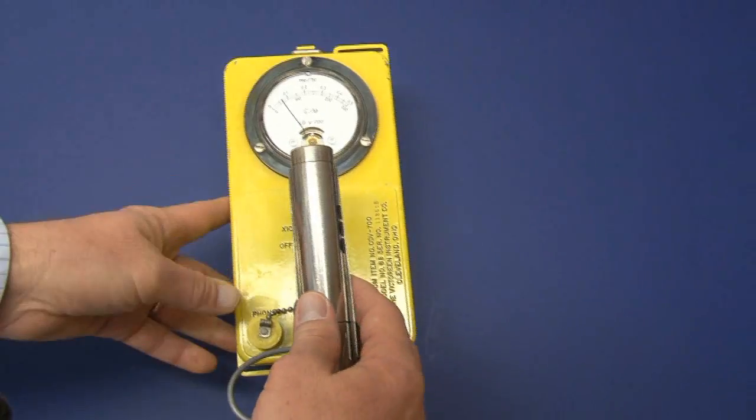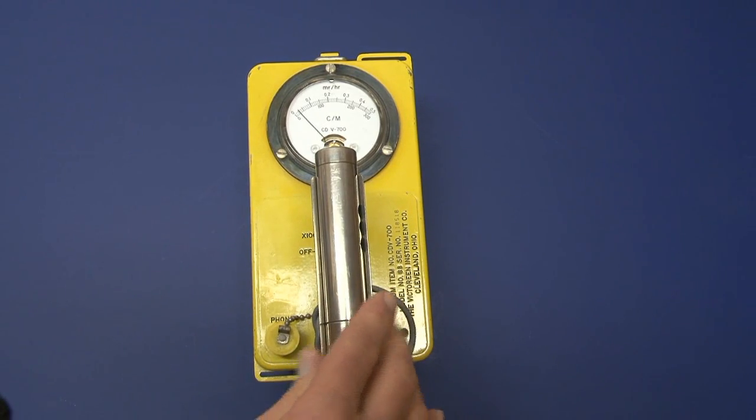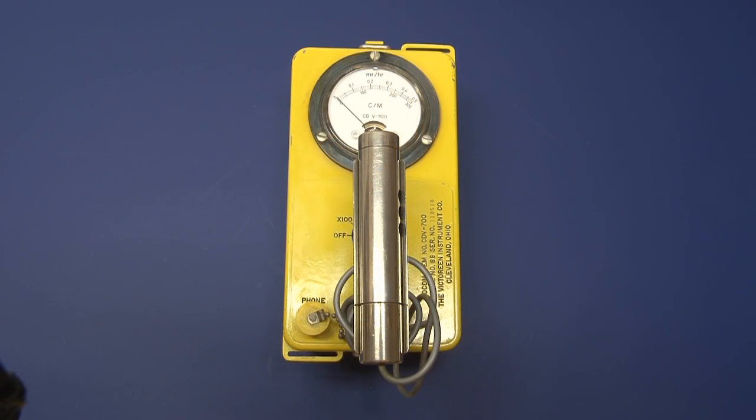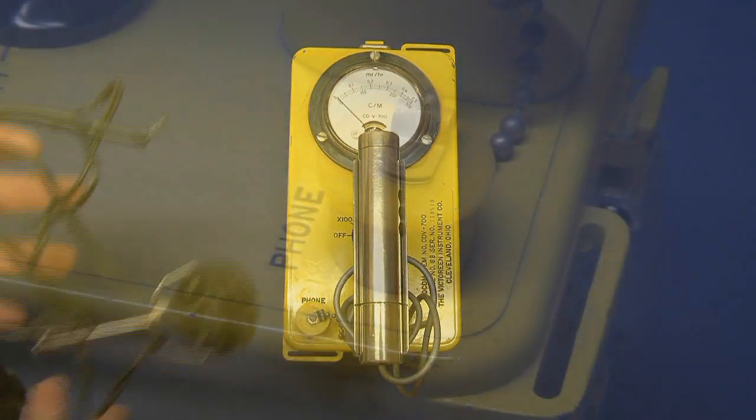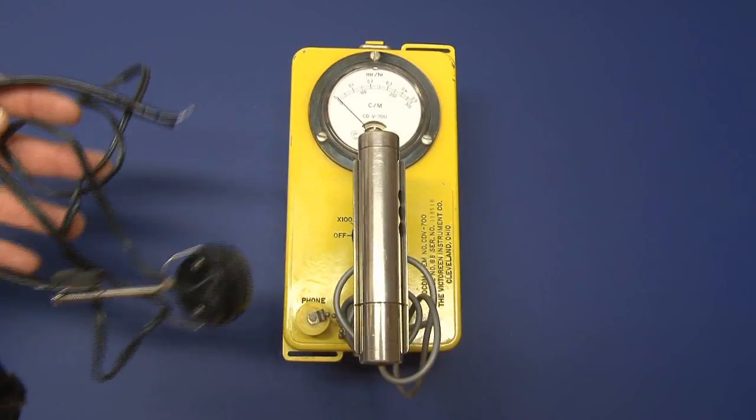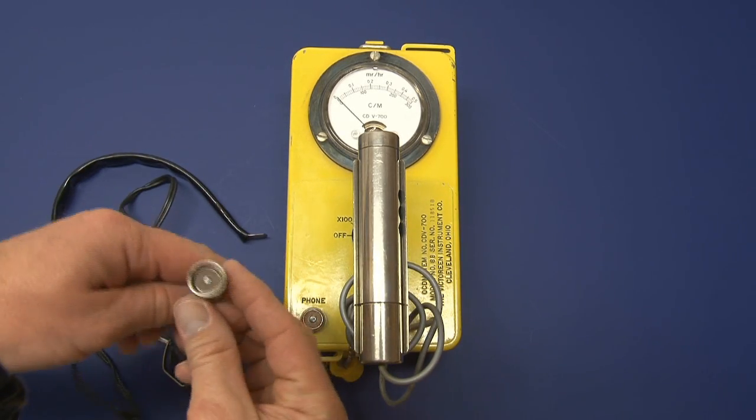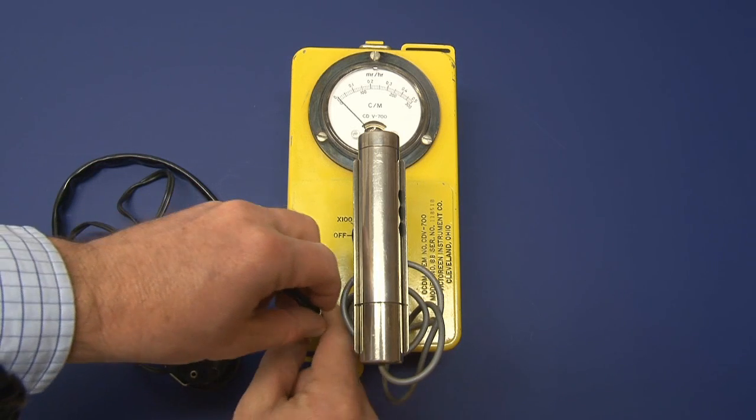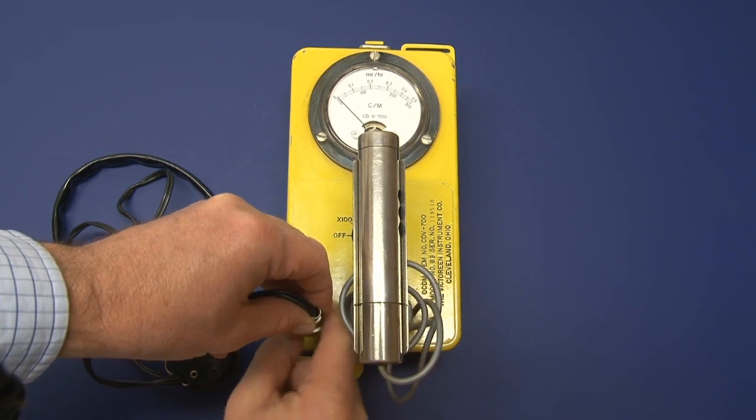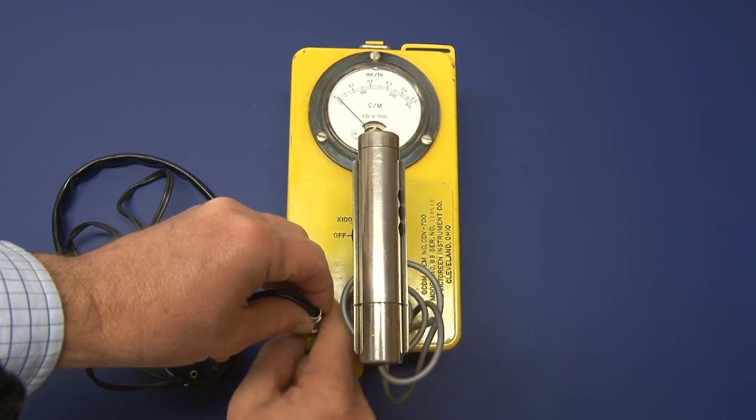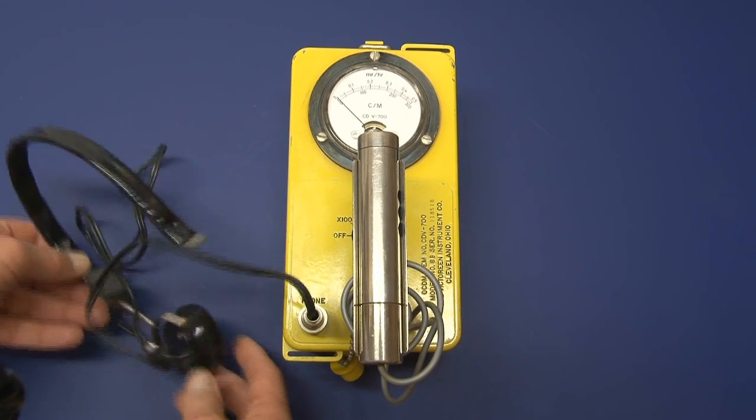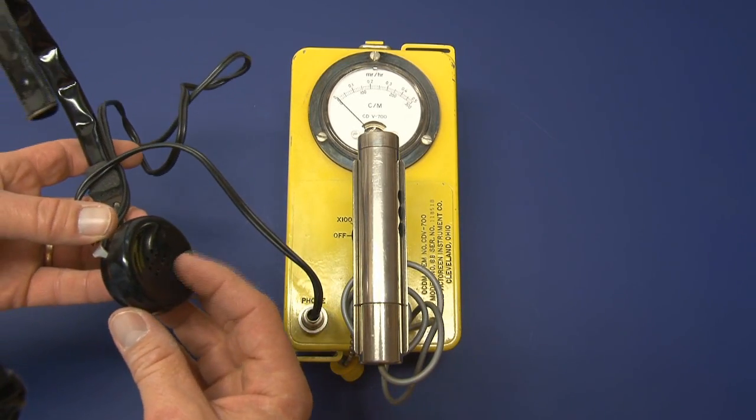This instrument does have an audio capability. It has a place here where you can plug in the earphones that were issued with the instrument. The instrument earphones look something like this. The idea is you can just remove this little cap here and you've got a little connector here that you can screw into place, and then you can hear the clicks through the speaker as the radiation is detected.